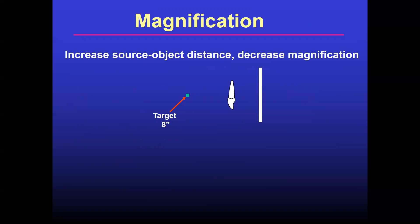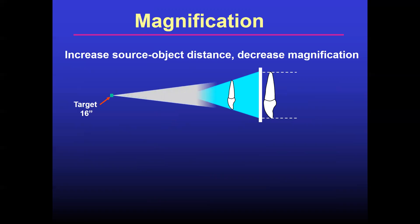Magnification. Increased source object distance causes decreased magnification. So here is an example for it. The target is like 8 inch. So here you can see the magnification. Since the source and object distance is small, which causes increased magnification. When you increase the distance between the target and the object, you will get less magnification.